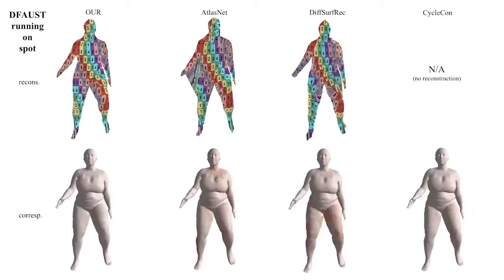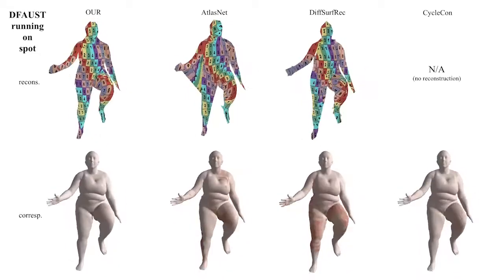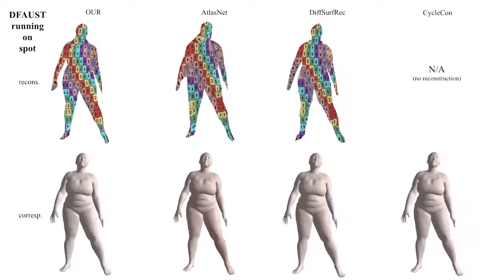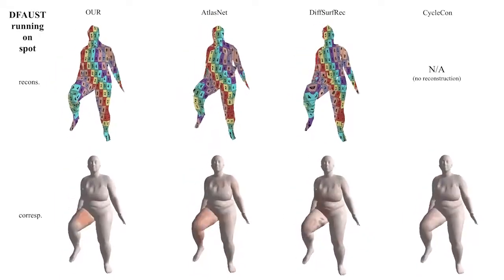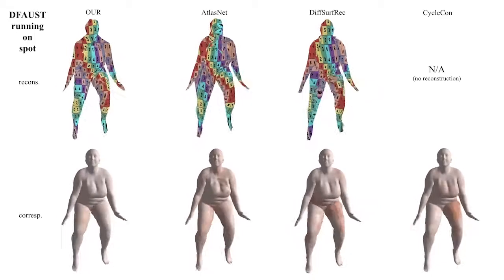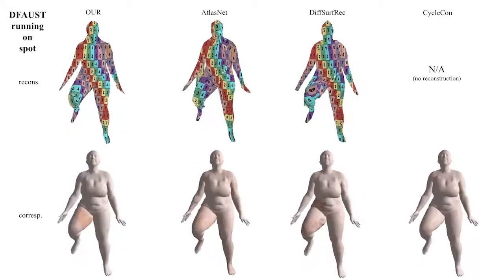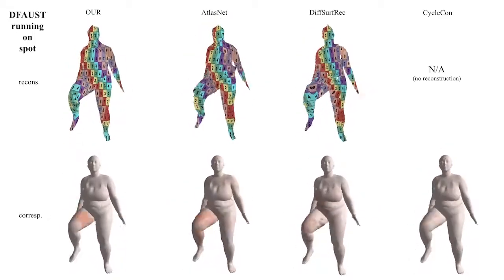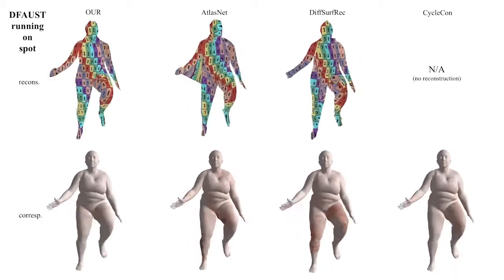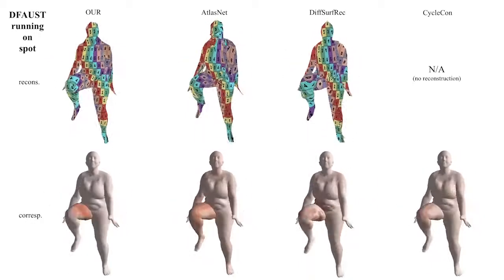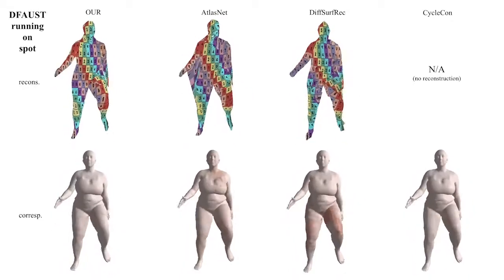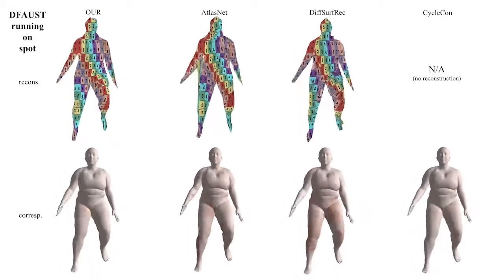In the running sequence, AtlasNet produces an erroneous reconstruction, which in turn leads to wrong correspondences, while DSR struggles with keeping the surface coherent — for instance, in the thigh area. Here, CycleCon has better correspondence accuracy; however, it still introduces more errors in the upper body, which eventually yields lower accuracy. Note how temporal coherence prevents us from wrong reconstruction, in contrast to AtlasNet.